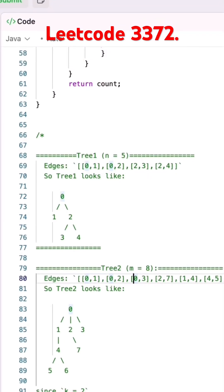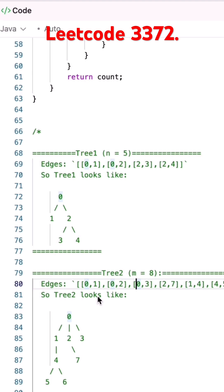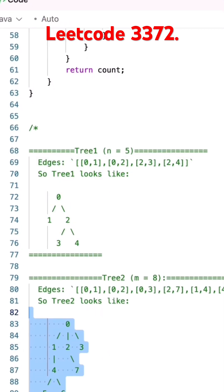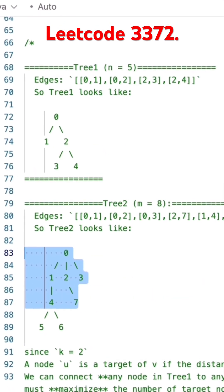These trees can be represented like this. I'll call it tree 1 and tree 2. We have tree 1 and tree 2, and we're given k equals 2, so k minus 1 is 1.